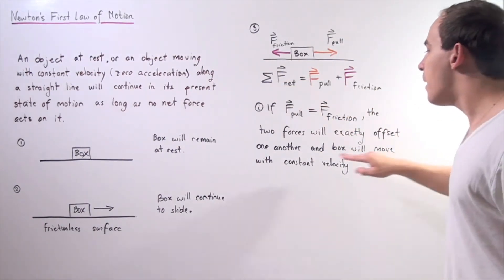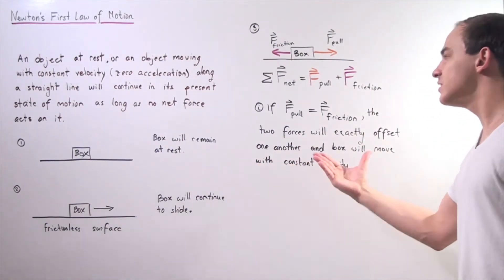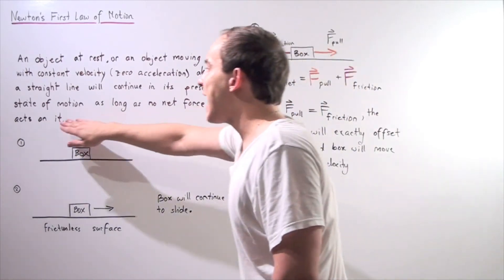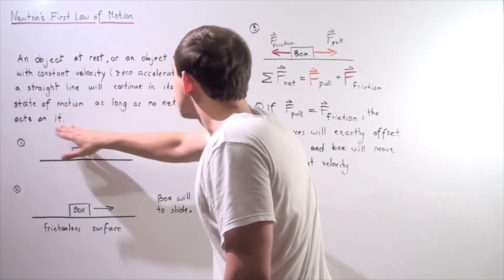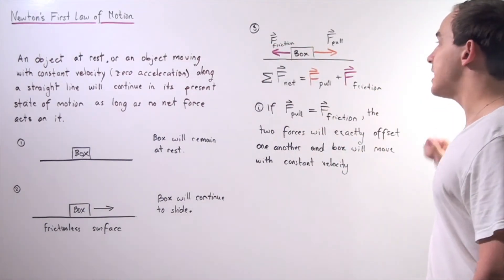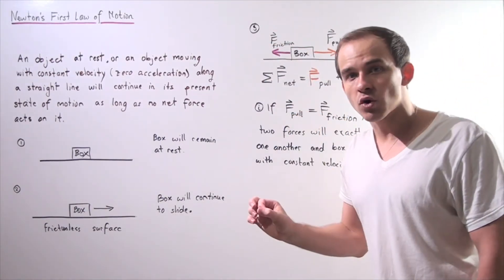In this case, the box will move with constant velocity because we have no net force acting on our object. So that means our object will continue in its present state of motion as long as our net force is zero.